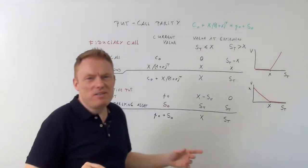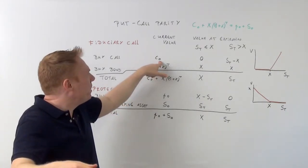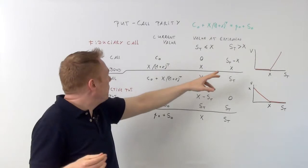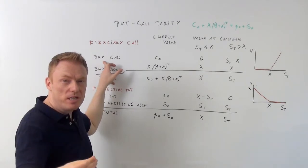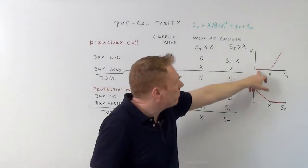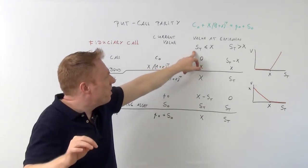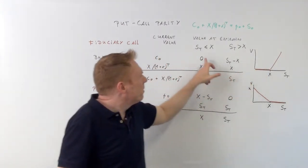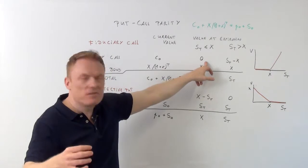So we pay C sub-zero — sub-zero because we stand right now at period zero and we have to invest this amount of money. I indicated the value, the line indicating the value of a long call, because we buy the call — we buy the right to buy an underlying at a price agreed upon at the outset. So if the stock price at expiration is inferior to X, the value of the call is equal to zero because we don't exercise it.